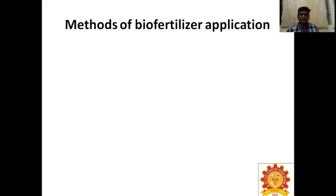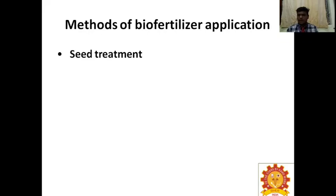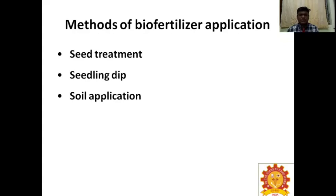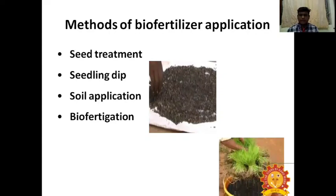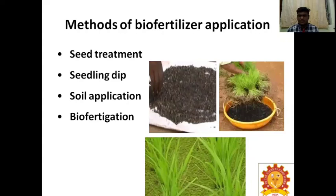Methods of biofertilizer application: first method is seed treatment — use three packets (each 200 g), add rice gruel, mix with the seed required for the required area, keep for 12 hours under dry conditions, and keep in a dark region. Second is seeding dip method. Third is soil application method — mix bioinoculants with soil and broadcast. Fourth is biofertigation — application of biofertilizer along with irrigation water, especially done in drip irrigation method.